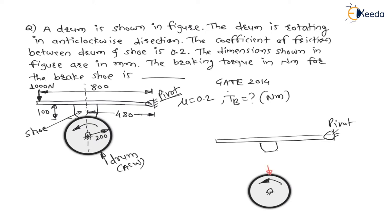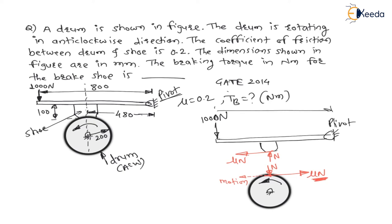This shoe will apply a normal reaction on the brake drum, and there will be an equal and opposite normal reaction on the shoe as an action-reaction pair. Due to anticlockwise rotation, the contact point on the drum moves towards the left, so the frictional force mu*N acts opposite to motion. There is an equal and opposite reaction mu*N on the brake shoe lever. The 1000N force is at a distance of 800mm from the pivot, the normal reaction is at 480mm, and the vertical distance of mu*N from the pivot is 100mm.